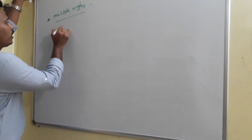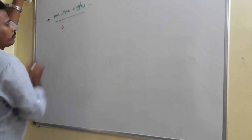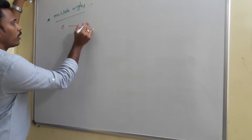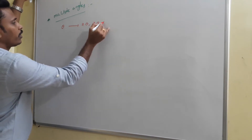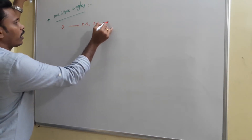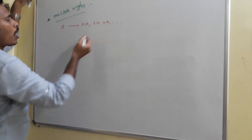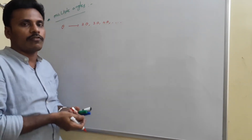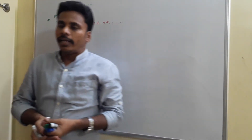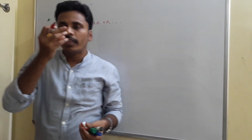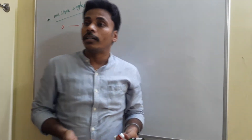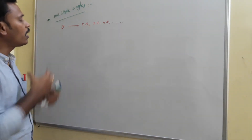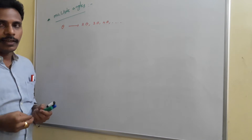Suppose if I have theta, and theta is an angle, then the multiples of that angle are nothing but 2 theta, 3 theta, 4 theta, and so on. Usually we know the definition of multiple. With the same idea, if theta is an angle, then its multiples like 2 theta, 3 theta, 4 theta all will represent the multiples of that angle theta.